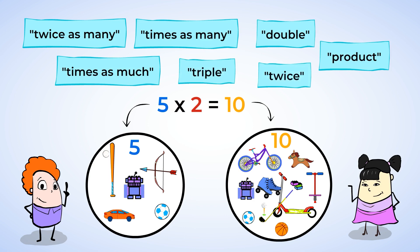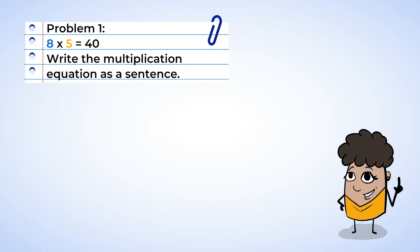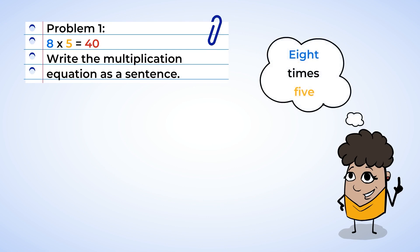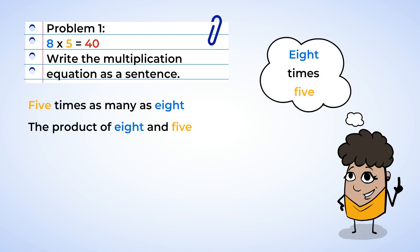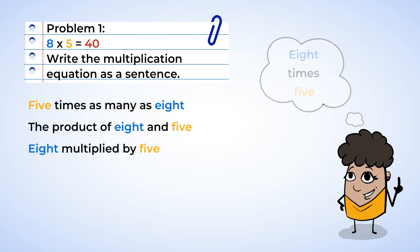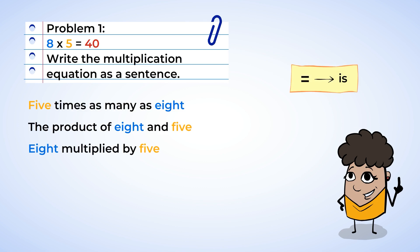Let's look at a few more examples to become more comfortable with translating and solving them. Eight times five equals 40 — write the multiplication equation as a sentence. There are a few ways we can do this. Let's start with the multiplication portion of the equation: eight times five. Multiplying eight by five can be rewritten as five times as many as eight. We can also use the word product and say the product of eight and five. The equal sign can be rewritten as the word is.